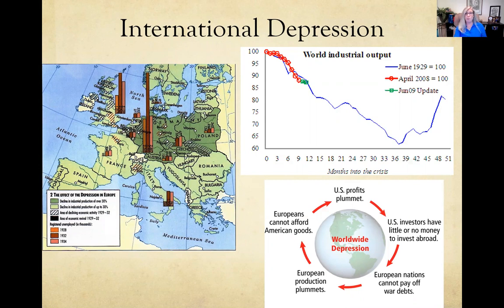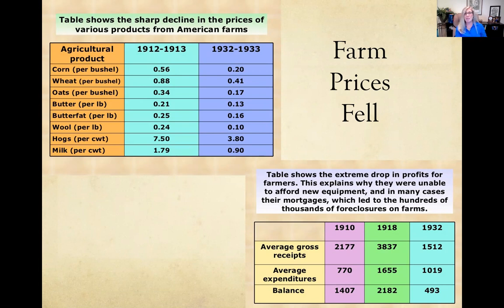We also need to remember that farmers were struggling before the rest of the country began to experience this, and it was largely ignored. Crop prices were a fraction of what they had been, but mortgage payments and debts weren't changing. In many respects, it was actually more expensive to harvest their crops and transport them to market than they could get for those crops — so farmers were better off not even harvesting some of them.